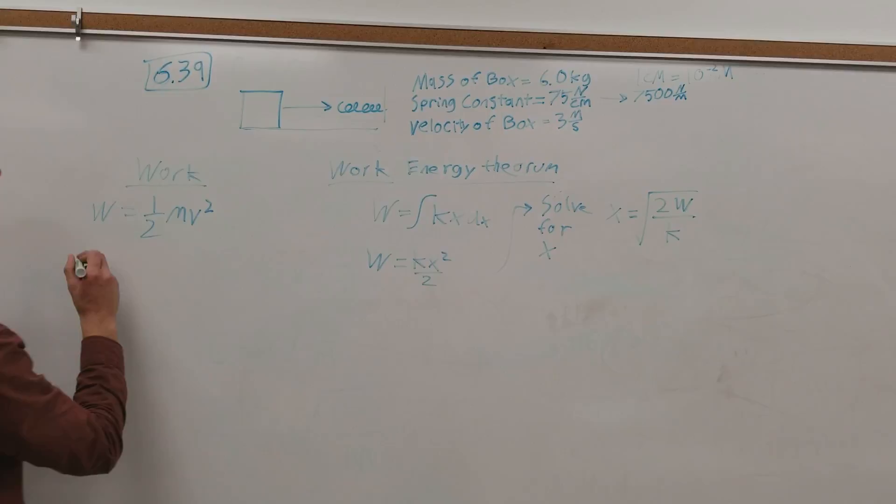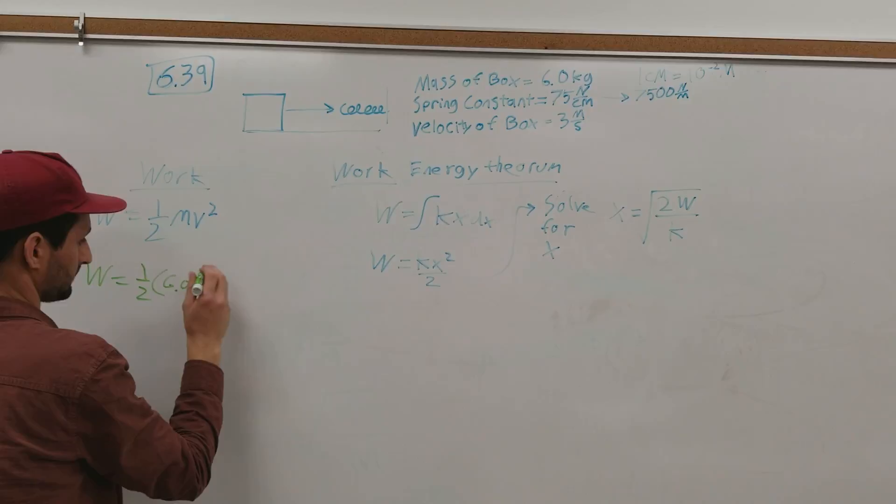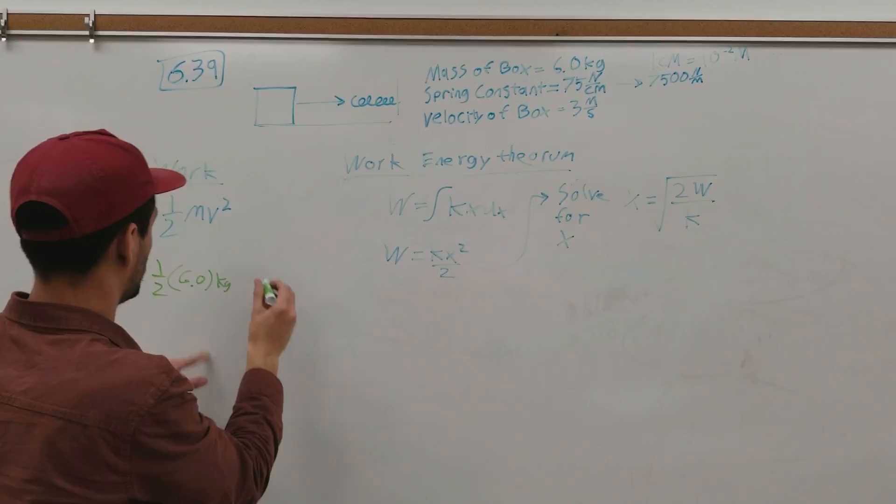We're going to get work equals one-half times the mass, which is 6.0 kg, and then we have the velocity squared, which the velocity was 3 meters per second, and that's squared.